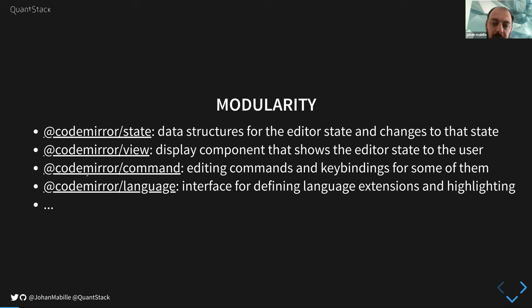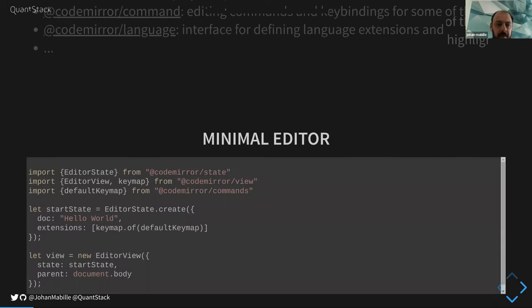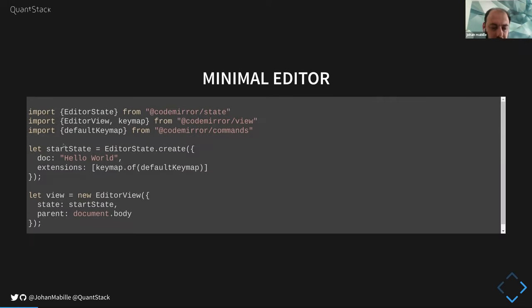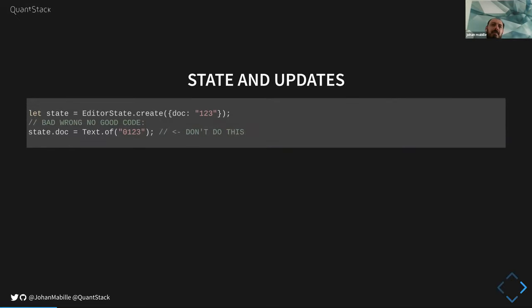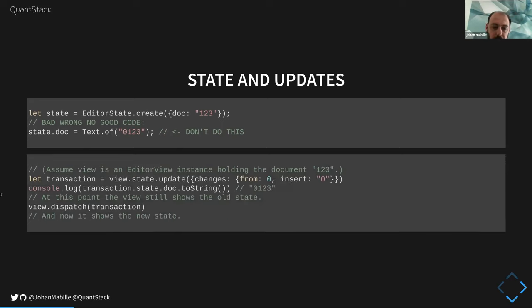Here is an example. You start by initiating a state — a state stores among other things the document itself and extensions. Then we instantiate a view on that state. The view embeds the state and a DOM element which is a parent, so where you want to attach the editor. The key idea in CodeMirror 6 is that the state is immutable — you never change the state directly. Instead you create what we call a transaction. A transaction embeds changes to the document but you can also embed other changes to the state.